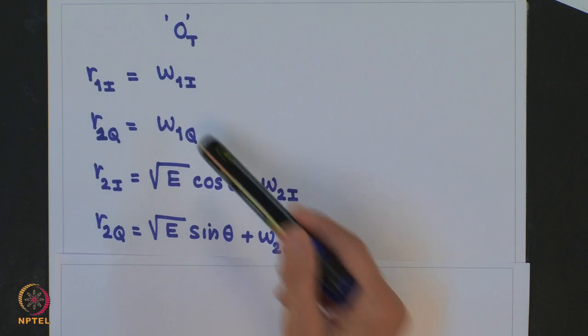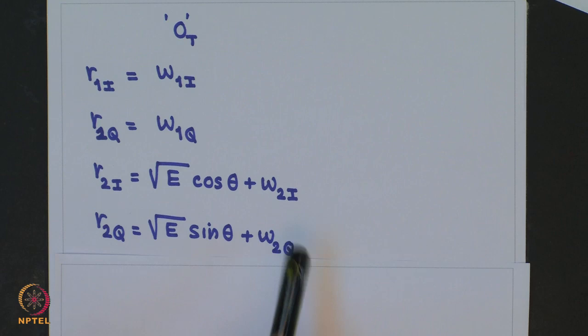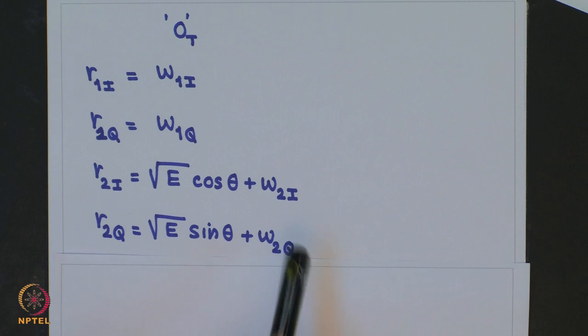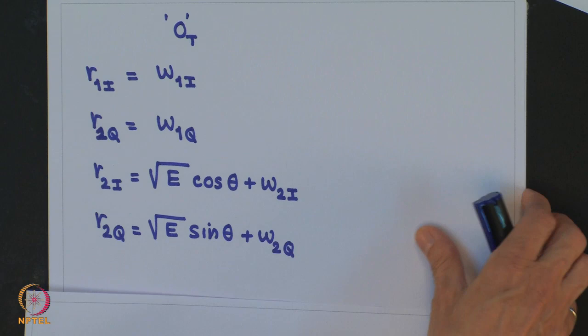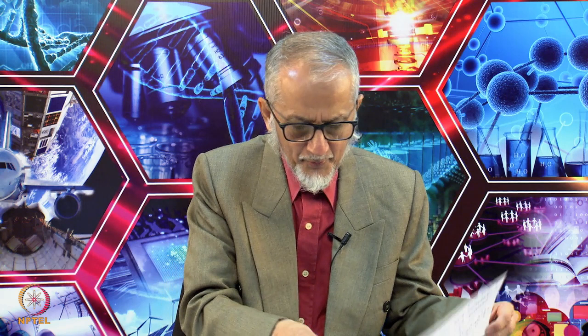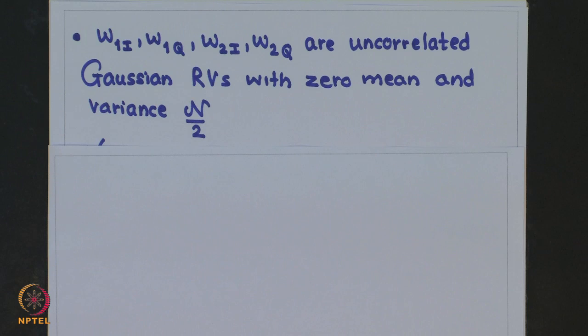Note that all noise components W_1i, W_1q, W_2i, and W_2q are uncorrelated Gaussian random variables with zero mean and variance N/2. Since they are uncorrelated Gaussian random variables, they are also statistically independent. We need to find the joint PDF of the received vector components given that symbol 1 was transmitted, and also the joint PDF given that symbol 0 was transmitted. Once we have these joint PDFs, we can find the maximum likelihood ratio.